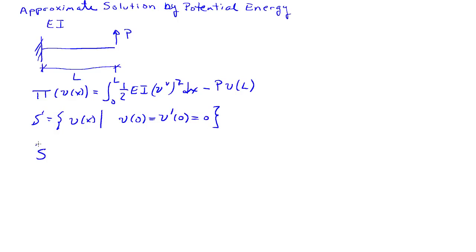We'll minimize pi over a subspace S tilde where we choose a one degree of freedom basis. V of X is taken to be some constant C times X squared. S tilde is a proper subset of S.